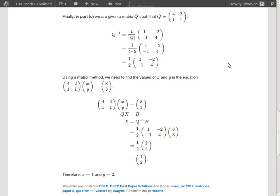Hey guys, welcome back. I'm still on question 11 of the CXC CSEC Math January 2012 paper 2 and I'm moving on to part C. In part C we're given a matrix Q such that Q is this 2x2 matrix containing the elements 4, 2, 1, 1 and we're going to find the inverse of Q.